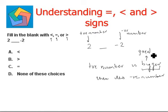So here the word bigger is replaced by greater than. The symbol of greater than is this one. So two blank negative two is filled up with a greater than sign, with the opening of this sign towards the positive number. The blank space is filled by the greater than sign. This is option B.